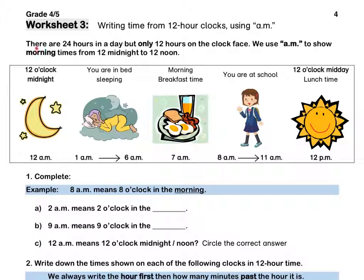Worksheet 3. There are 24 hours in a day but only 12 hours on the clock face. We use AM to show morning times between 12 midnight and 12 noon. So 12 o'clock midnight we write as 12 AM. The new day has just started. From 1 AM to 6 AM you are sleeping in bed. At 7 AM it is morning and you are having breakfast. From 8 AM to 11 AM you are at school and 12 o'clock midday it is lunch time at school.